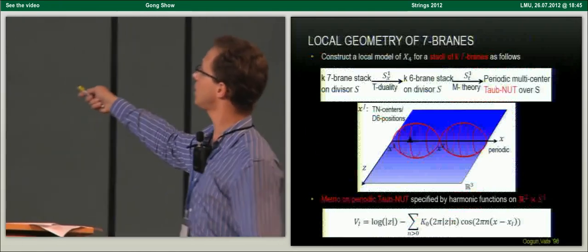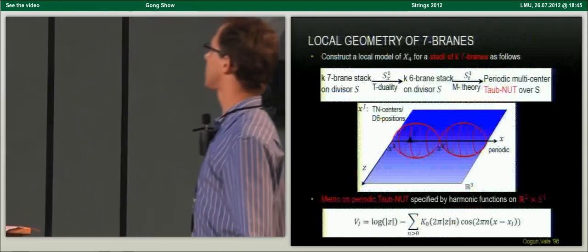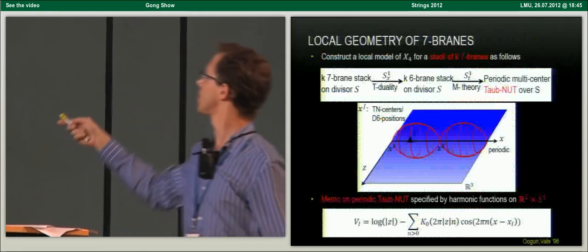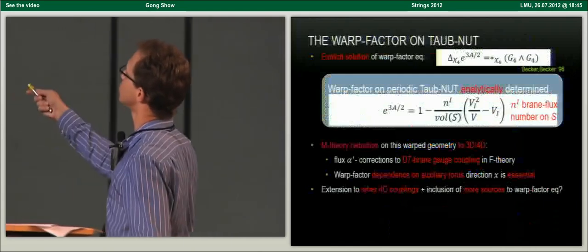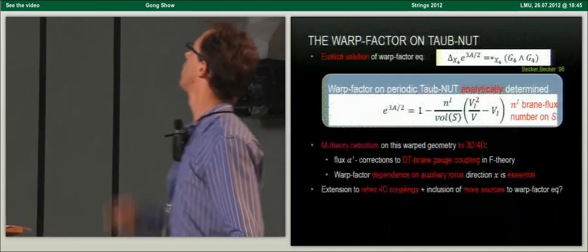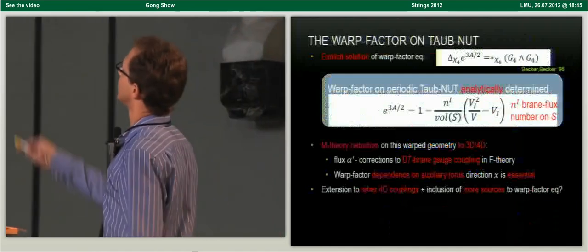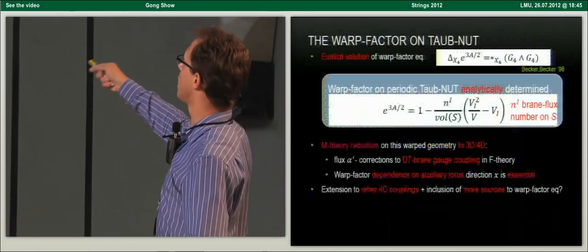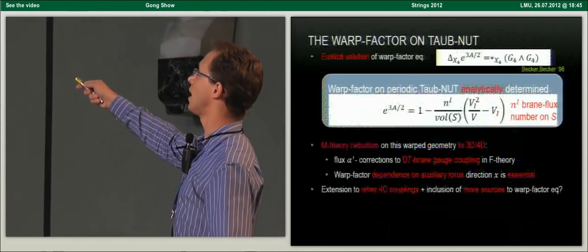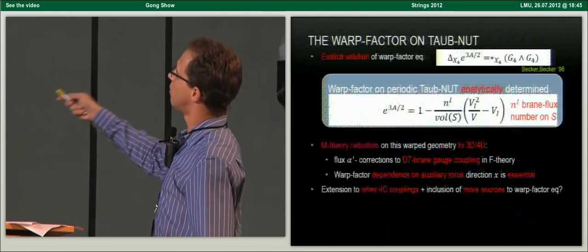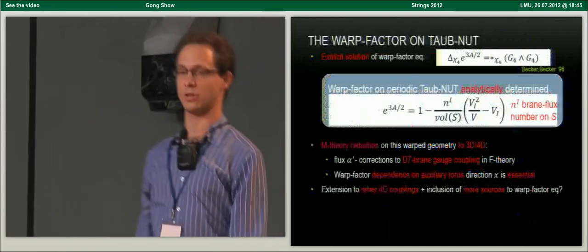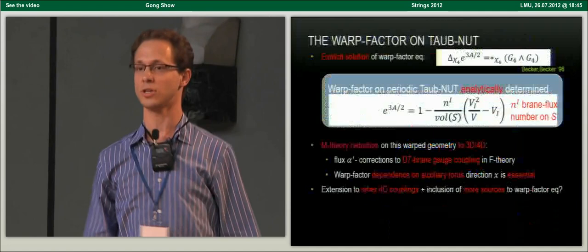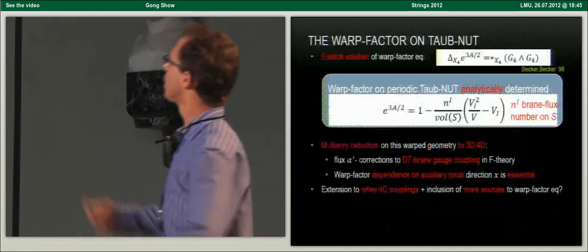We also have the usual M-theory circle fibered non-trivially over this Taub-NUT space. The metric on this local model can be explicitly calculated; it is specified fully by harmonic functions on R2 times S1. Since we know the metric, we can solve the flux-induced warp factor equation, and the full warp factor can be analytically calculated. Upon performing the M-theory compactification on this warped geometry, it is possible to compute certain alpha-prime flux corrections to the seven-brane gauge coupling function that cannot be obtained in a different way in F-theory.